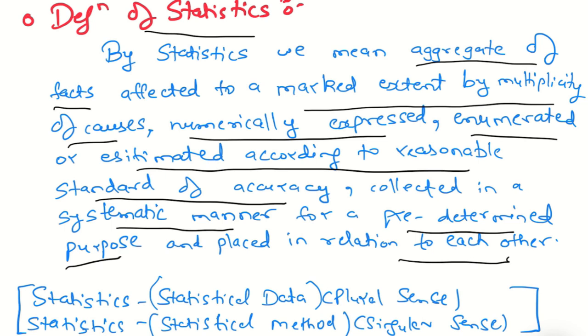Affected to a marked extent by multisibility of causes. What is the meaning? For example, production of rice. If we are collecting data about the production of rice, the production depends on multiple factors: the seed used, the quality of soil, the rainfall, the weather, and the cultivation method.